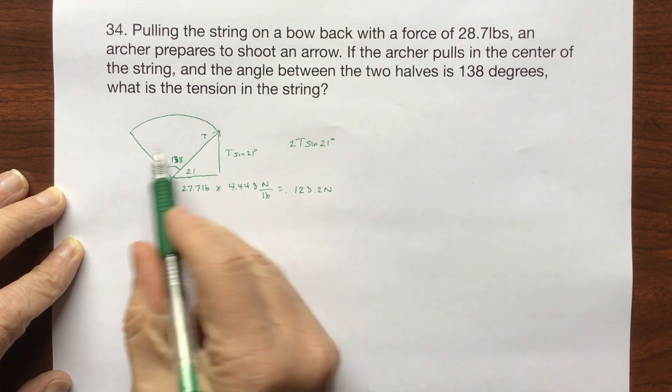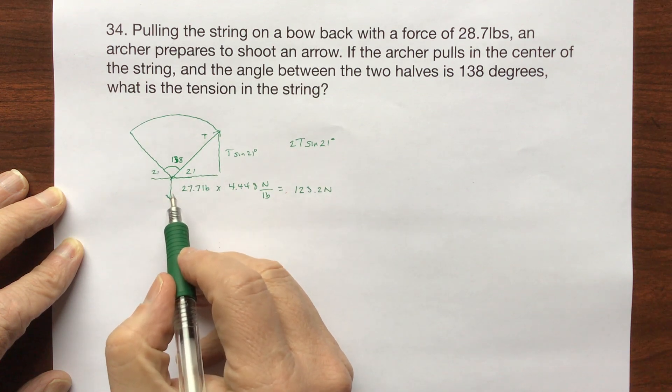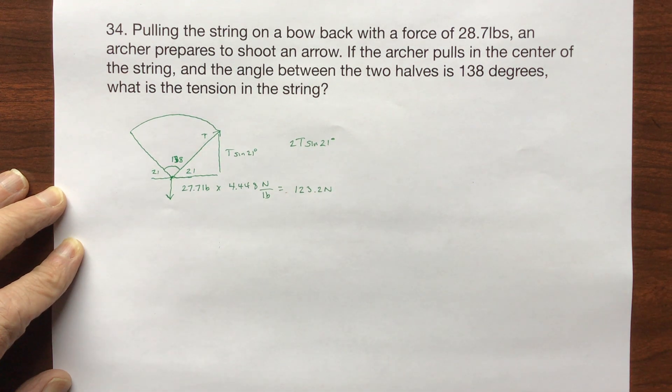Well, this and this is exactly the same. Whatever I'm pulling back here, this is pulling here because it's not moving. It's in equilibrium. So as long as I've got it pulled back, it's pulling forward with the same amount I'm pulling back and there's no acceleration of that string either way.